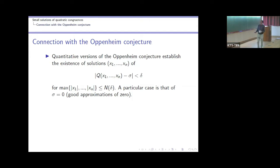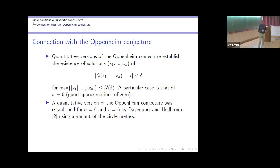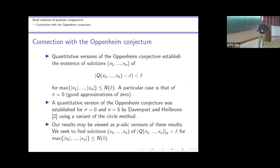A particular case is approximation of zero. That was established by Davenport and Heilbronn long ago in the 1960s using a variant of the circle method. One can understand our problem as a p-adic version of a quantitative Oppenheim conjecture: finding solutions x₁, ..., xₙ such that the p-adic norm of Q(x₁, ..., xₙ) is small — less than δ — while maximizing how small the xᵢ can be.